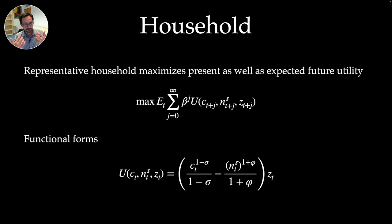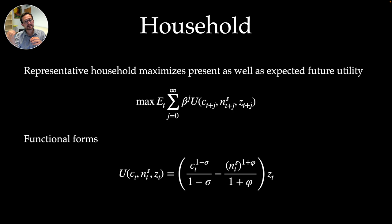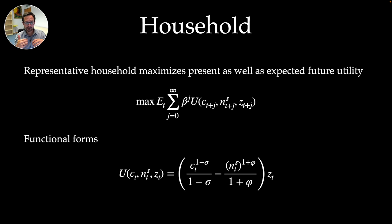The utility function has three arguments: C is a consumption index combining many different goods, with positive marginal utility. N_T^S is labor supply — hours worked or employed household members — with negative marginal utility. Z is a preference shifter, shifting the discount factor up or down, making the household temporarily more or less patient. Sigma is risk aversion — its inverse is the elasticity of substitution — and phi's inverse is the Frisch elasticity of labor supply.